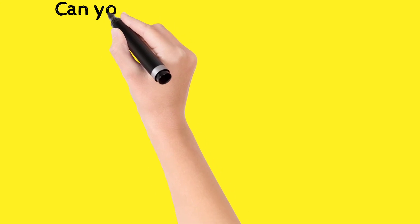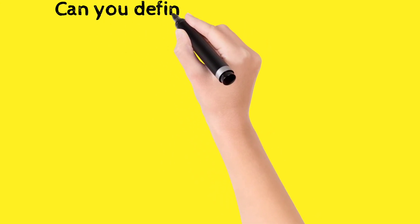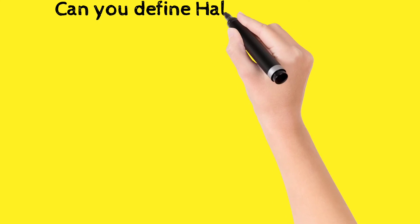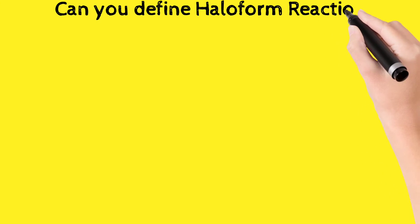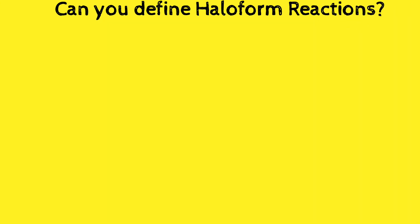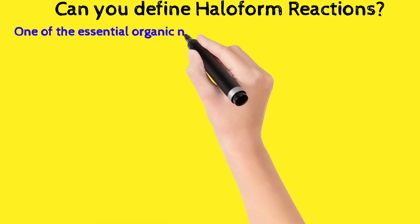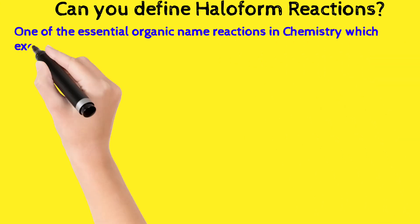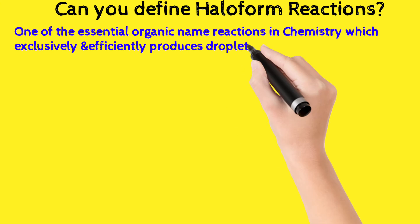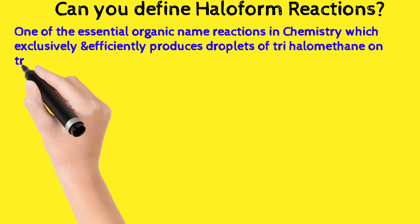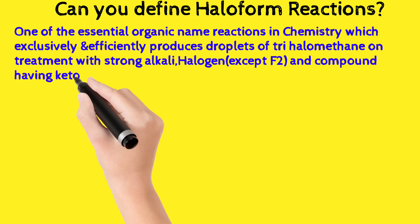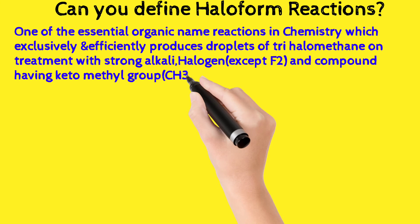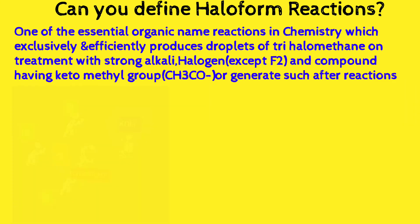So first, let's define what the haloform reaction is. Specifically, trihalomethane compounds are generally known as the haloform. It is one of the essential organic name reactions in chemistry which exclusively and efficiently produces pure droplets of trihalomethane on treatment with strong alkali and halogen, excluding fluorine.